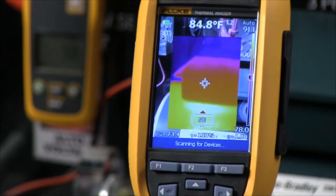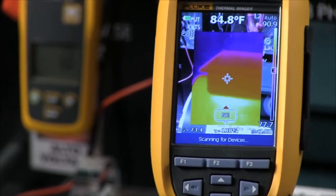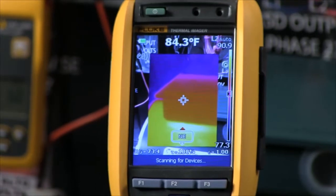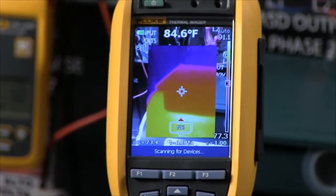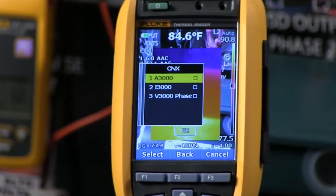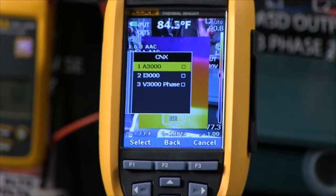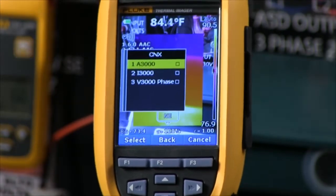Turn on the CNX capability. Right now it's scanning for the devices and it'll give us a list of the devices. We have a current module on the input power to the drive, a voltage module on the input power, and another current module on phase three between the drive and the motor.